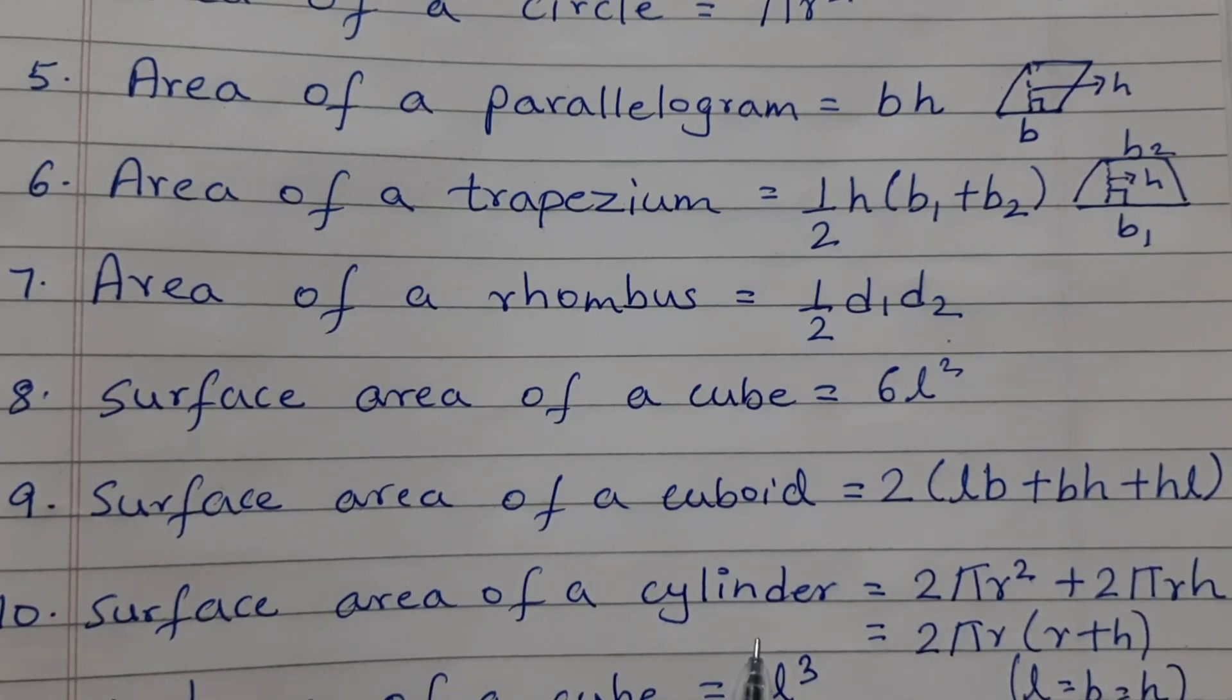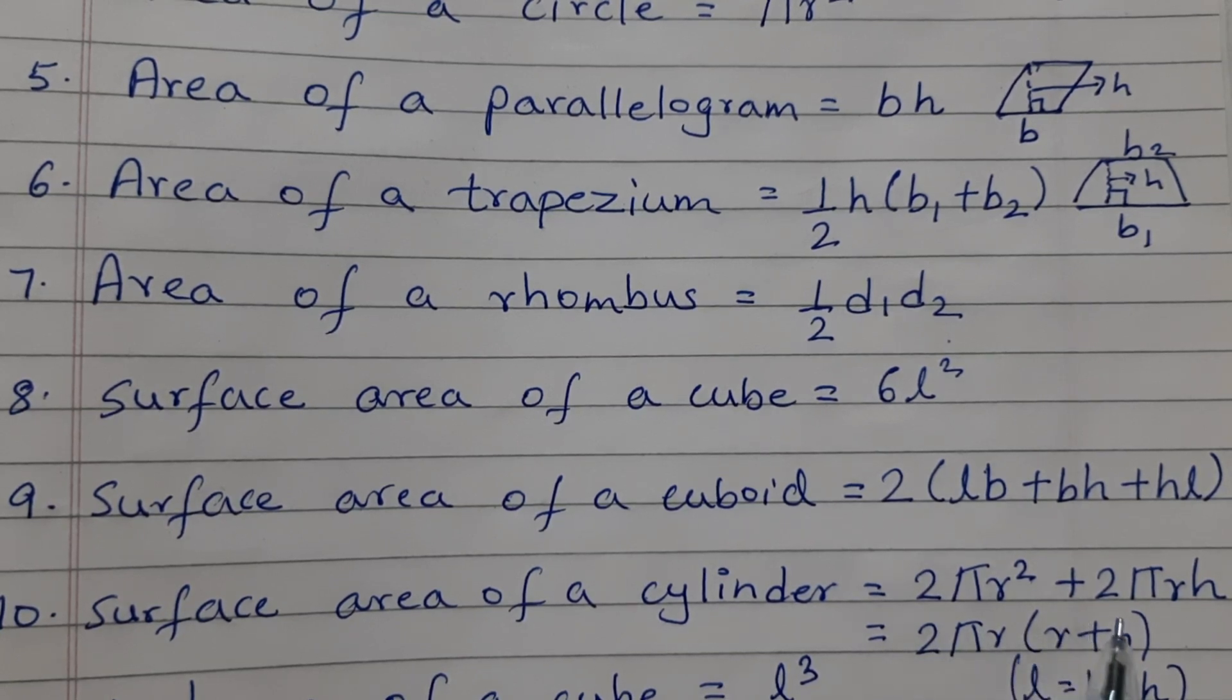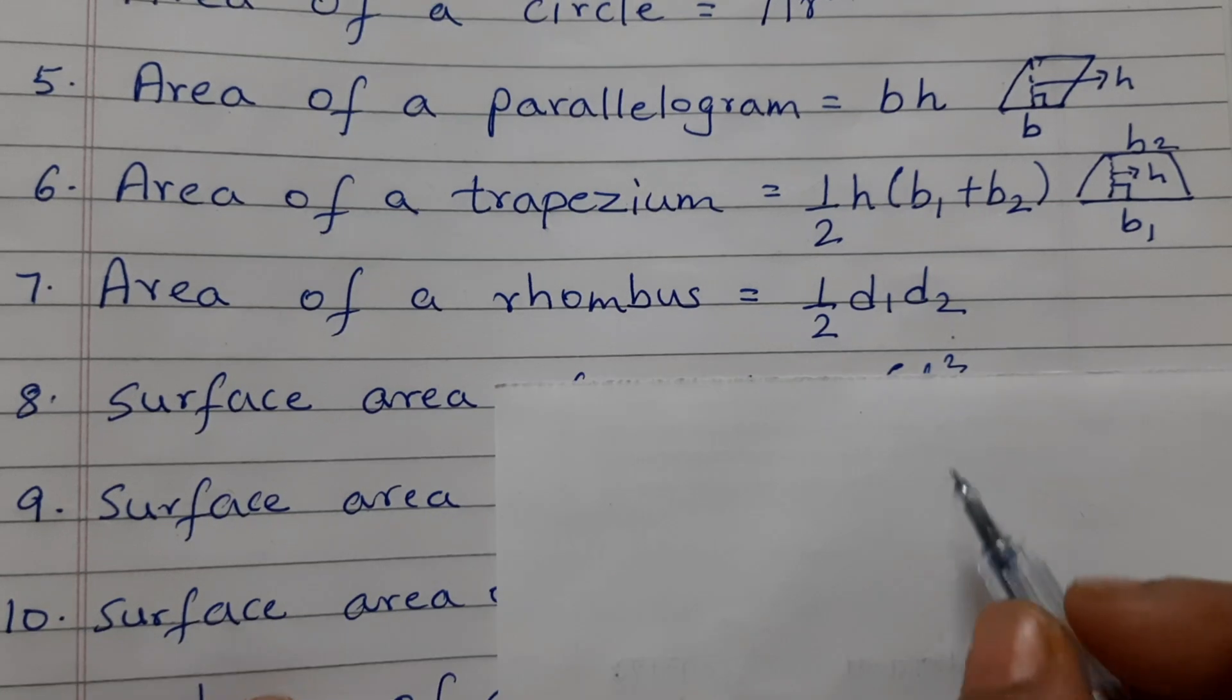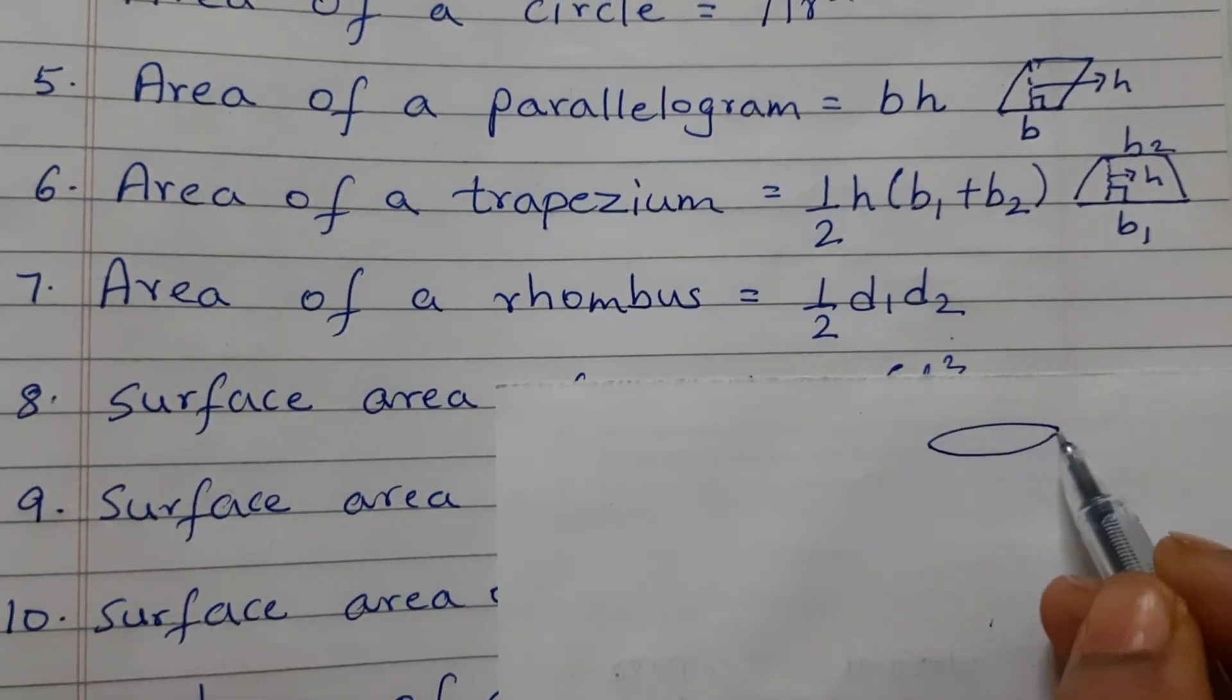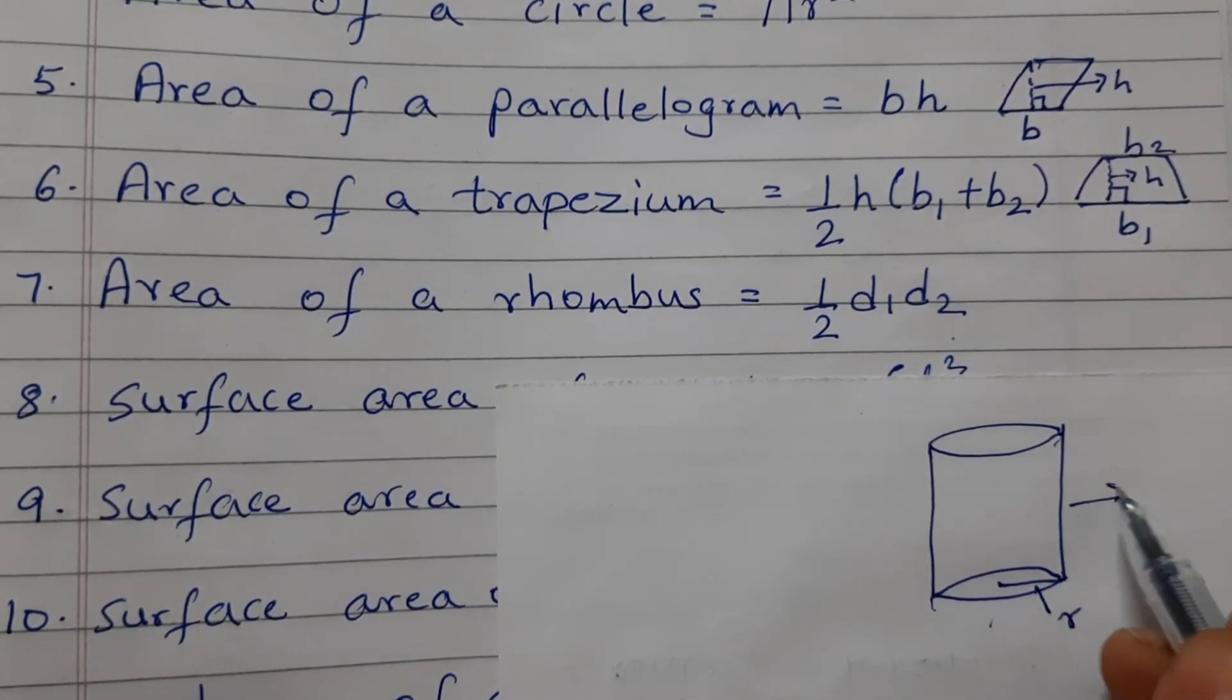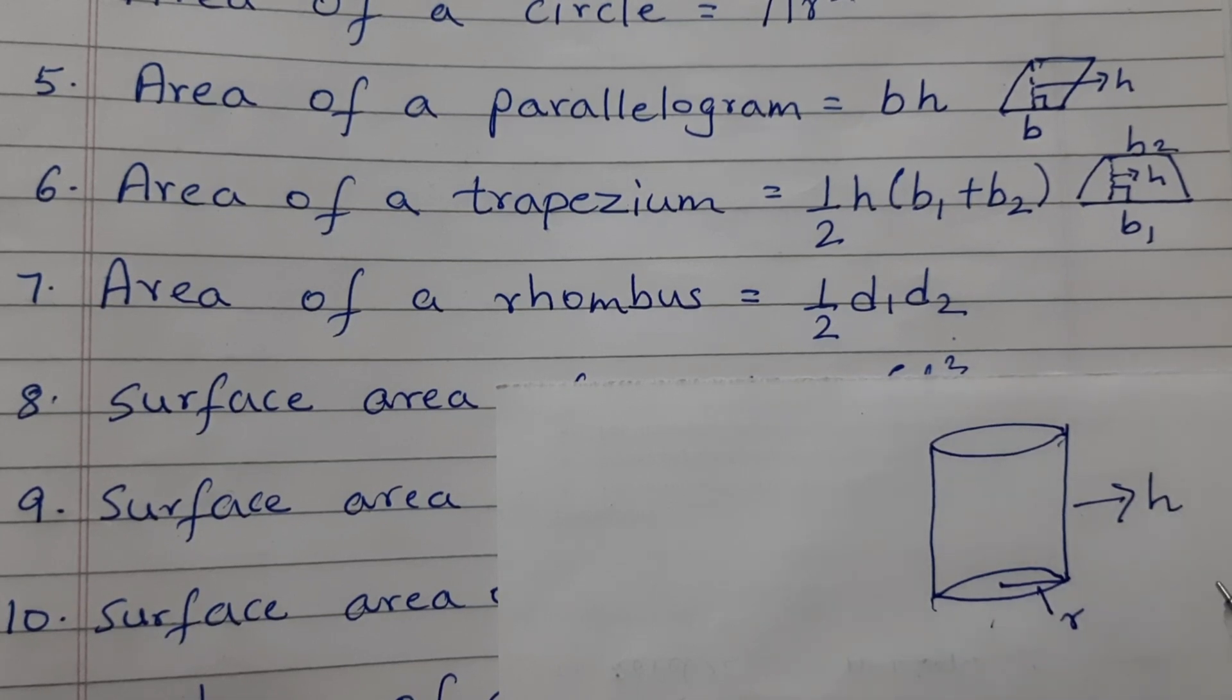Surface area of a cylinder, we can use any of these two formulas: 2 pi r squared plus 2 pi r h or we can use 2 pi r into r plus h. R stands for radius and h is the height. Say this is the cylinder, this is r the radius and this is the height of the cylinder.